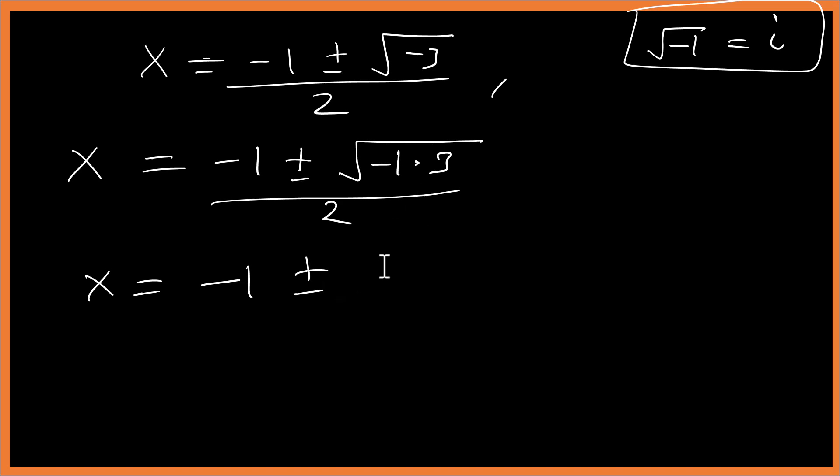So this side will be √3 times √(minus 1). From here, x is the same as minus 1 plus or minus i√3 over 2.